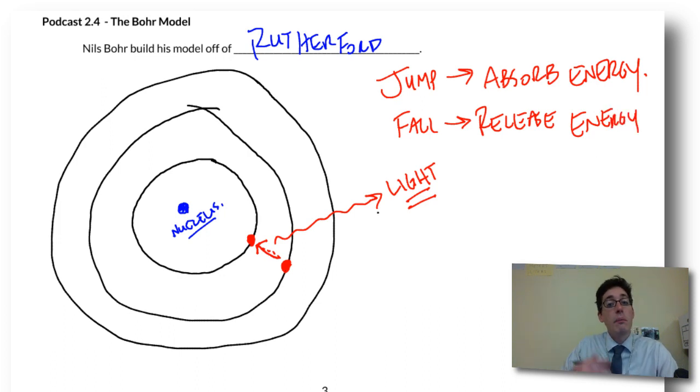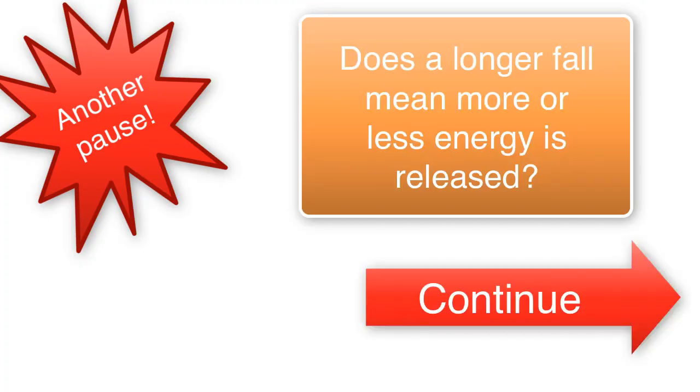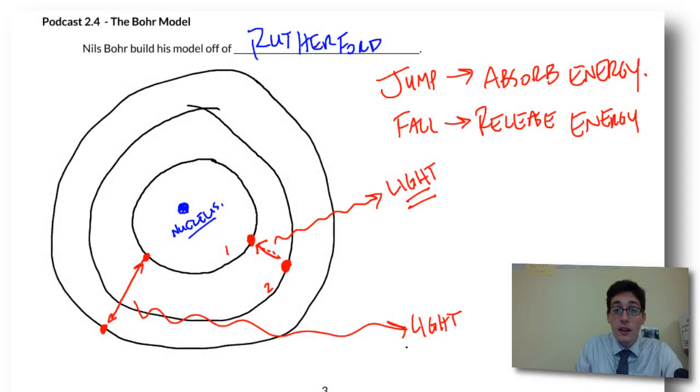This light can be measured. There is a distinct amount of energy between shell one and shell two. If you had another electron that jumped from shell one, let's say we jump up to three and then fall back down, we get more light. And this light has a higher energy, which is really important.